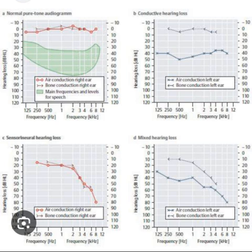Audiograms are most useful for objectively identifying deficits in hearing by looking at how sound travels through the auditory system via air conduction or bone conduction. Air conduction measures sound transmission from the outer ear through the middle ear and into the inner ear, where signals are sent to the CNS. Bone conduction measures transmission only from the inner ear to the CNS. Despite the power of this tool, many healthcare providers have difficulty accurately interpreting an audiogram.